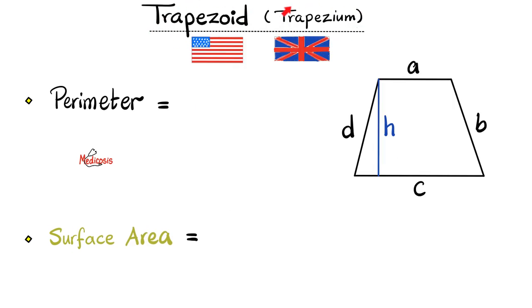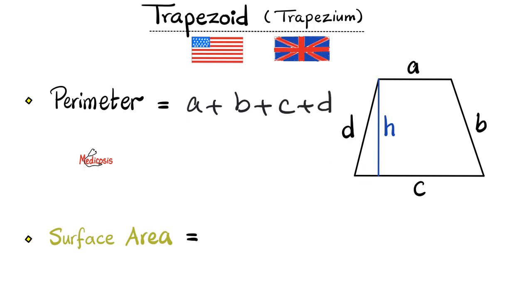Next, the trapezoid or trapezium — trapezium is British English, trapezoid is American English, both referring to the same object. The perimeter is easy: just add all sides together — A plus B plus C plus D. How about the surface area? Since A and B are not equal, we take the average: (A plus B) divided by 2, then multiply by the vertical height H.